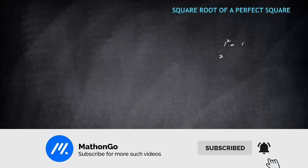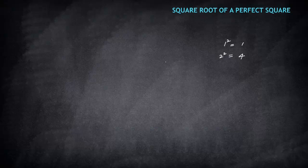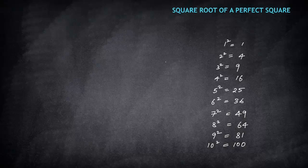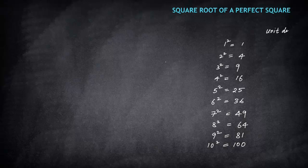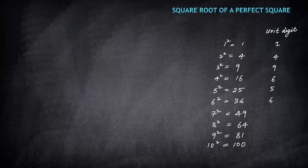So these are squares of the first ten natural numbers: 1 squared is 1, 2 squared is 4, 3 squared is 9, and so on till 10. I'm also making another column showing the unit digits of these squares — so that's 1, 4, 9, 6, 5, 6, 9, 4, 1, 0.